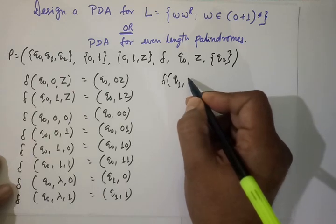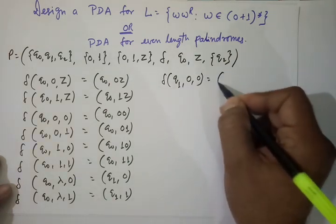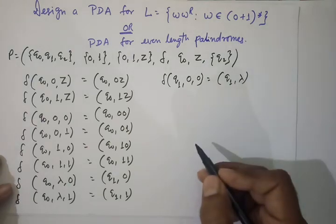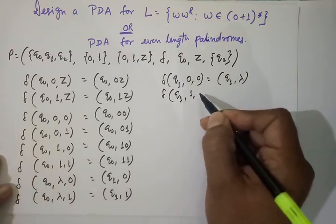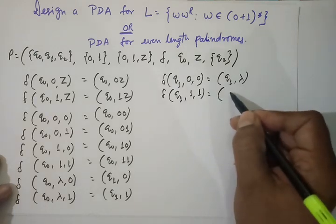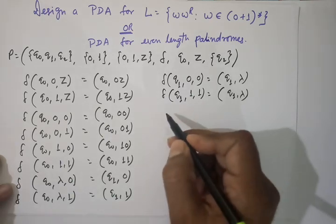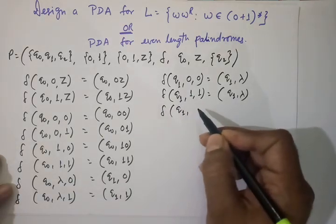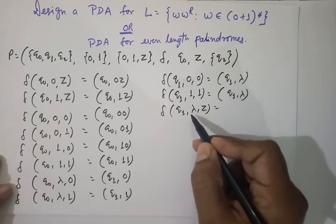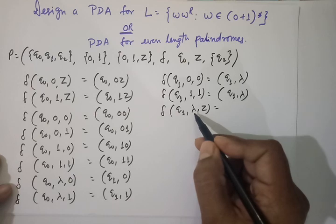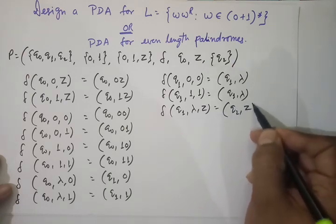From Q1, we start comparing the input string against the top of the stack and popping. If we are in Q1 reading 0 with top-of-stack 0, there is a match and we pop that 0. Similarly, if in Q1 reading 1 with top 1, we pop it. We keep popping symbols one by one as long as there is a match. Finally, when the bottom stack marker Z is exposed and all inputs are consumed, we move to Q2, our final state, and the string is accepted.